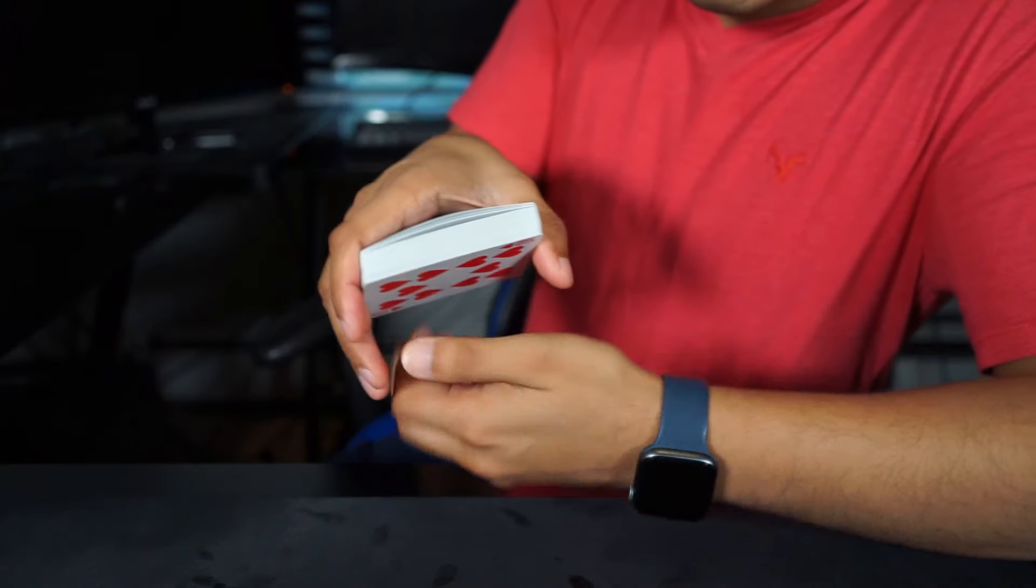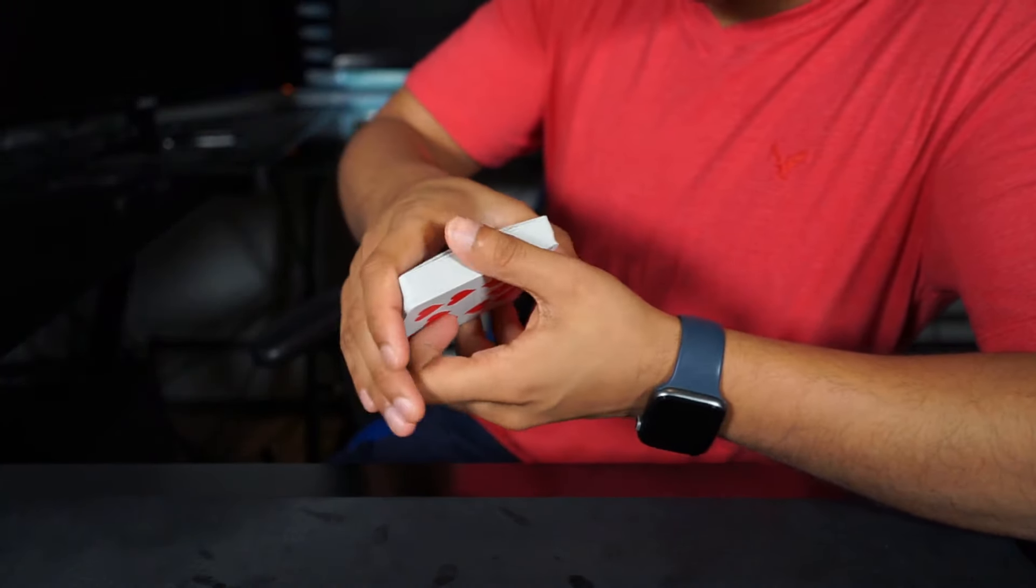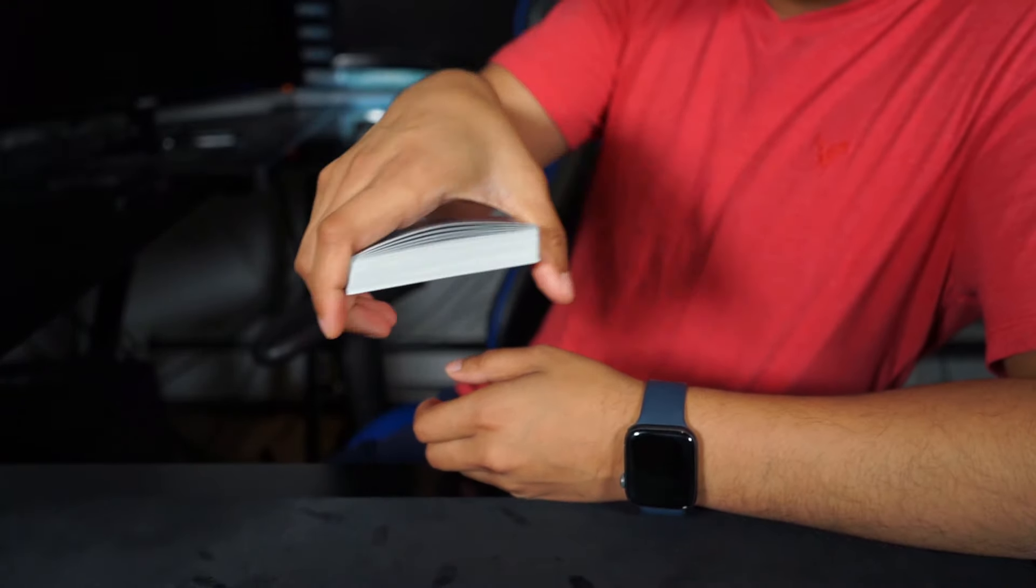Now you start off by gripping the deck like this. So instead of how you normally grip it with your hand horizontal, you're going to grip it with the hand vertical this time and you're going to grip the deck like this.